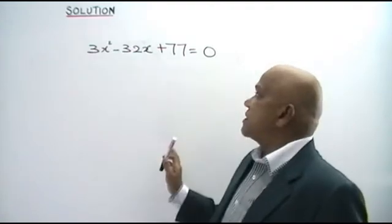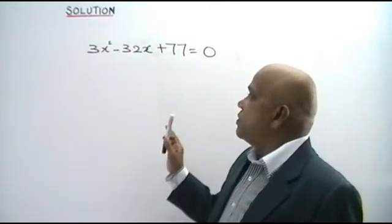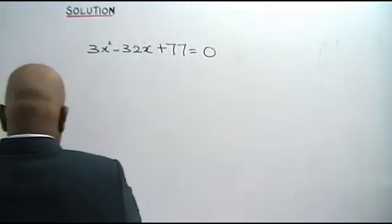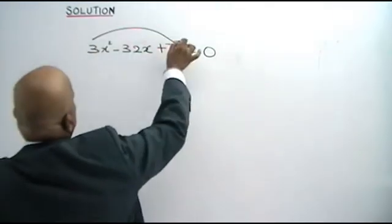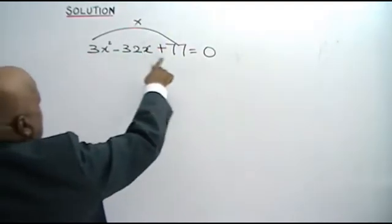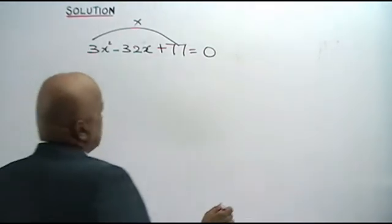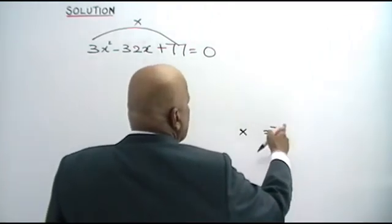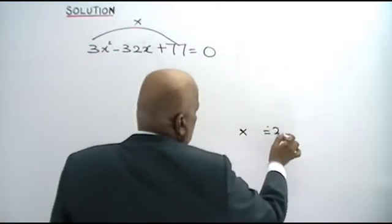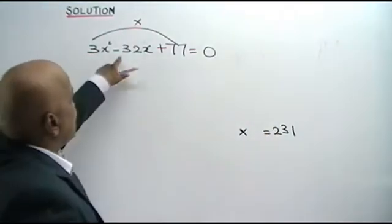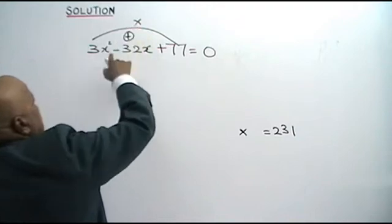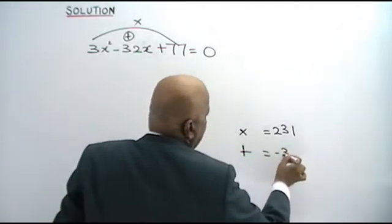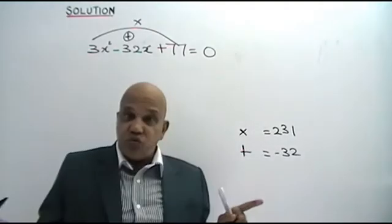In this technique, the factors technique, you will know halfway whether you are right or wrong. Think of two numbers. The product is 3 times 77, that is 231. And the sum is negative 32. The same two numbers added up must give you negative 32.